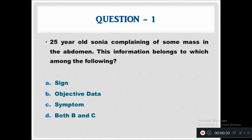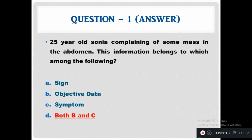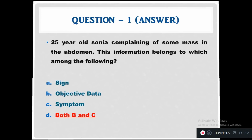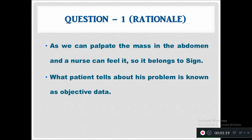Question 1: A 25-year-old Sonia is complaining of some mass in the abdomen. This information belongs to which among the following? Option A: sign. Option B: objective data. Option C: symptom. Option D: both B and C. The answer is both B and C. The rationale: we can palpate the mass in the abdomen, so it belongs to sign. What the patient tells about their problem is known as objective data.